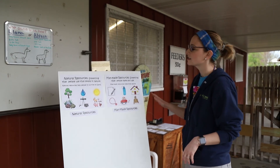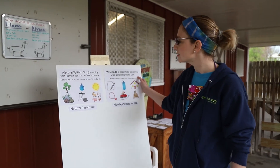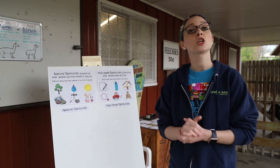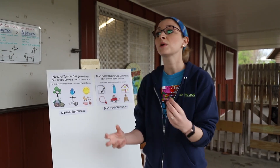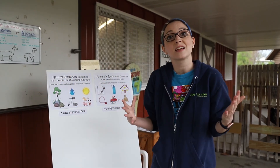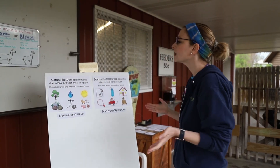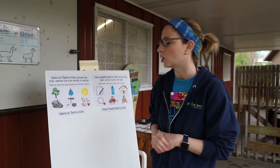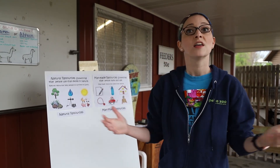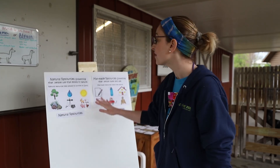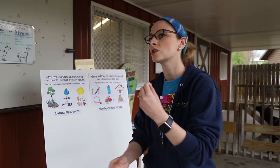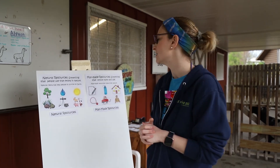Now on the other hand, man-made resources is something that humans make and use. These are things that we actually use machines for, and we take the supplies from nature but we change those into things that we can use. So an example would be paper and pencil. A paper and pencil originally come from trees; however, humans have used machines to change that tree into a paper and pencil.